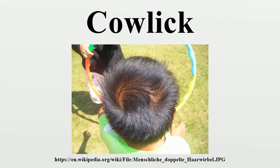A cowlick is a section of hair that stands straight up or lies at an angle at odds with the style in which the rest of an individual's hair is worn. Cowlicks appear when the growth direction of the hair forms a spiral pattern. The term cowlick originates from the domestic bovine's habit of licking its young, which results in a swirling pattern in the hair.